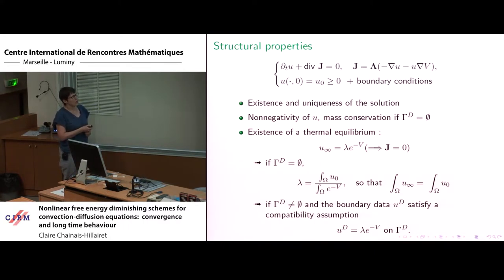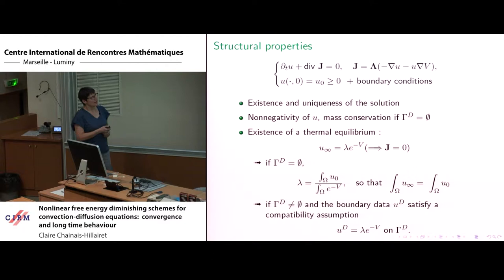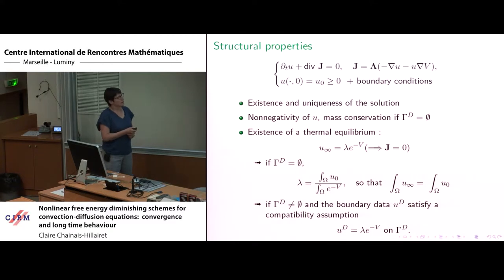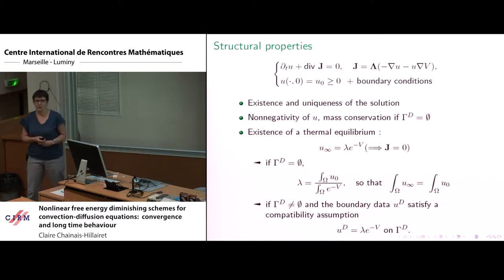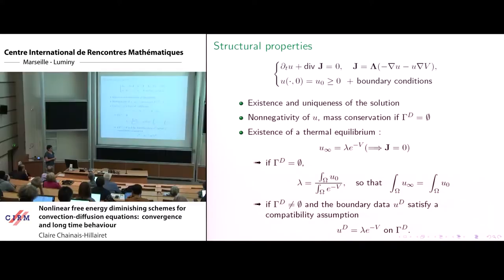If we have just no-flux boundary conditions, this works as a steady state, and lambda is fixed by the conservation of mass — we deduce lambda from the fact that the mass of the steady state must equal the mass of the initial condition. If on part of the boundary we have Dirichlet boundary conditions, then the boundary data U_d must satisfy a compatibility assumption and lambda is prescribed by the boundary data.